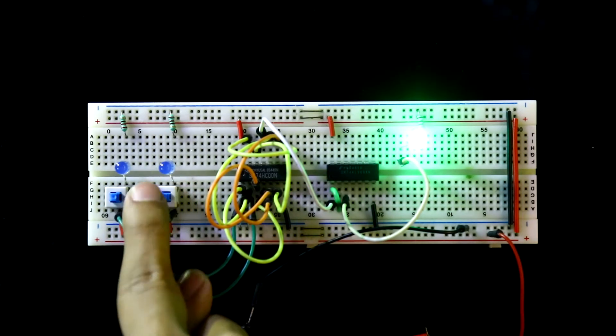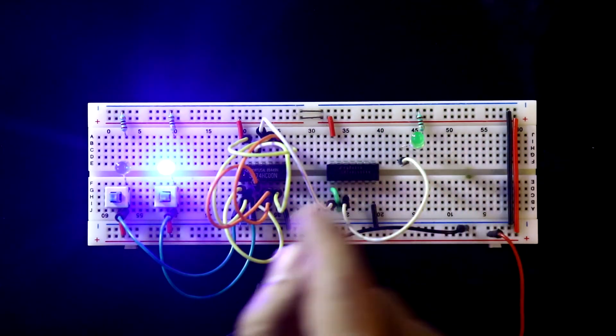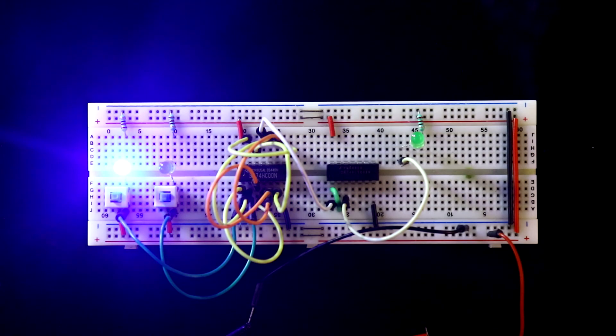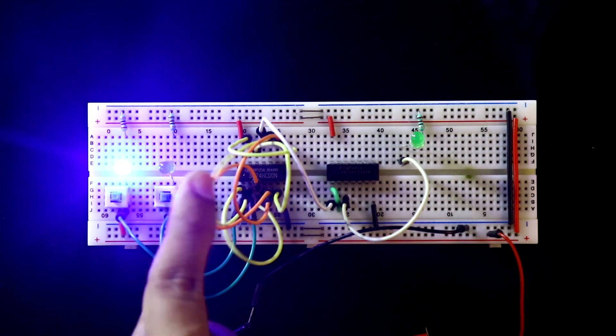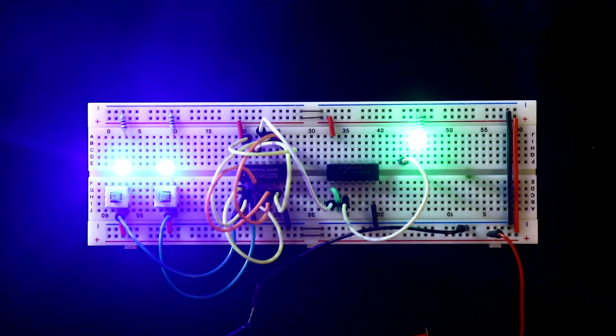Now 0, 1, output is 0. 1, 0, output is 0. And if both inputs are 1, 1, then we'll get the output.